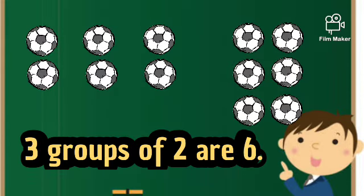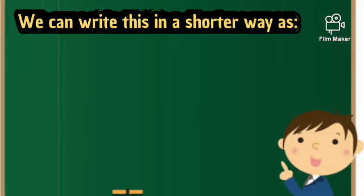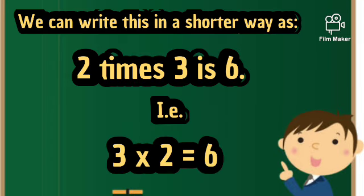Let us add in twos. Here you can see three groups of two balls and the total number of balls is six. We add here 2 + 2 + 2 = 6. We can write this in a shorter way as two times three is six. That is 3 × 2 = 6.